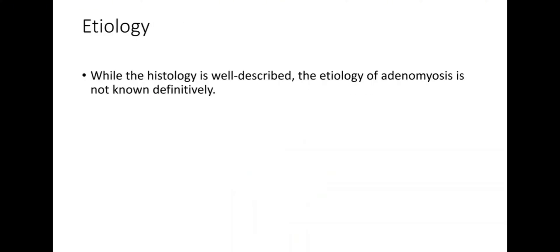While the histology is well described, the etiology of adenomyosis is not definitively known, and several theories have been postulated. The most commonly accepted theory is that adenomyosis results from a disrupted boundary between the deepest layer of the endometrium — the endometrium basalis — and the underlying myometrium. This process leads to a cycle of inappropriate endometrial proliferation into the myometrium with subsequent small vessel angiogenesis.